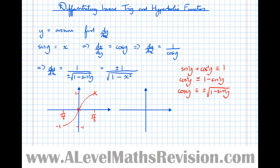Because we're reflecting through the line y = x, the coordinates of these key points just swap. So (π/2, 1) becomes (1, π/2); (0, 0) stays (0, 0); and (−π/2, −1) becomes (−1, −π/2).